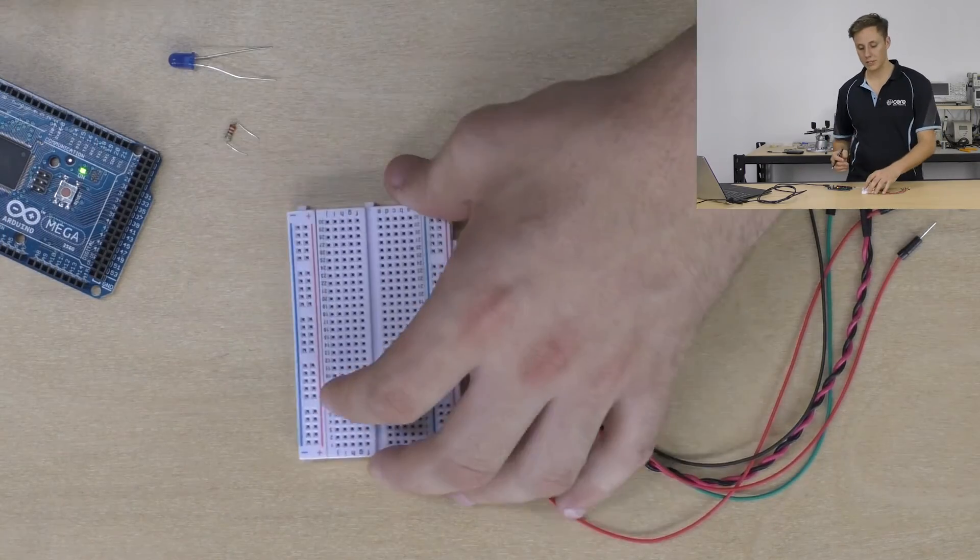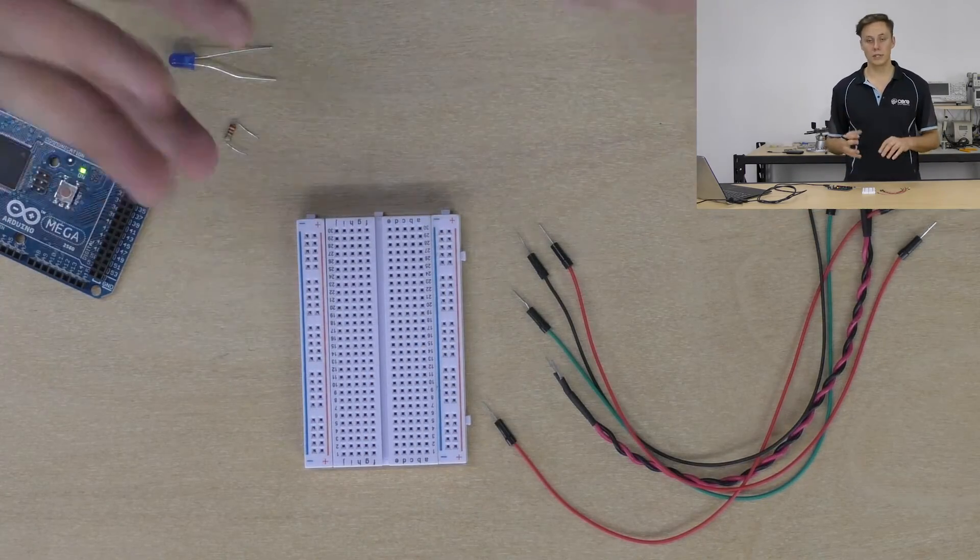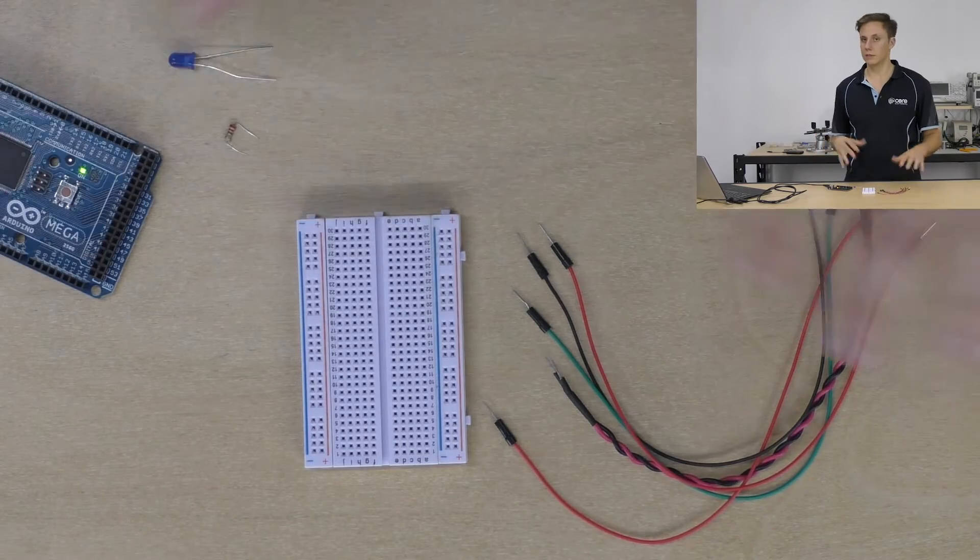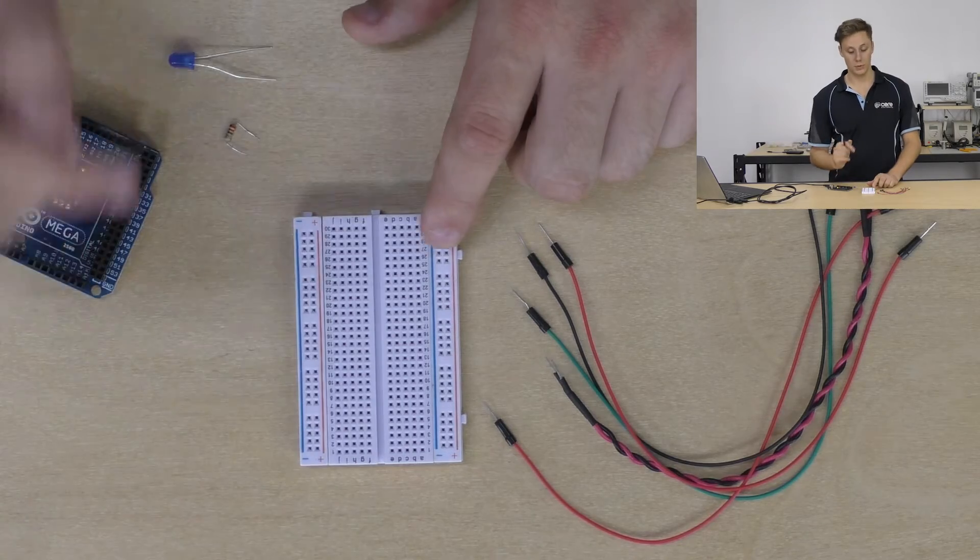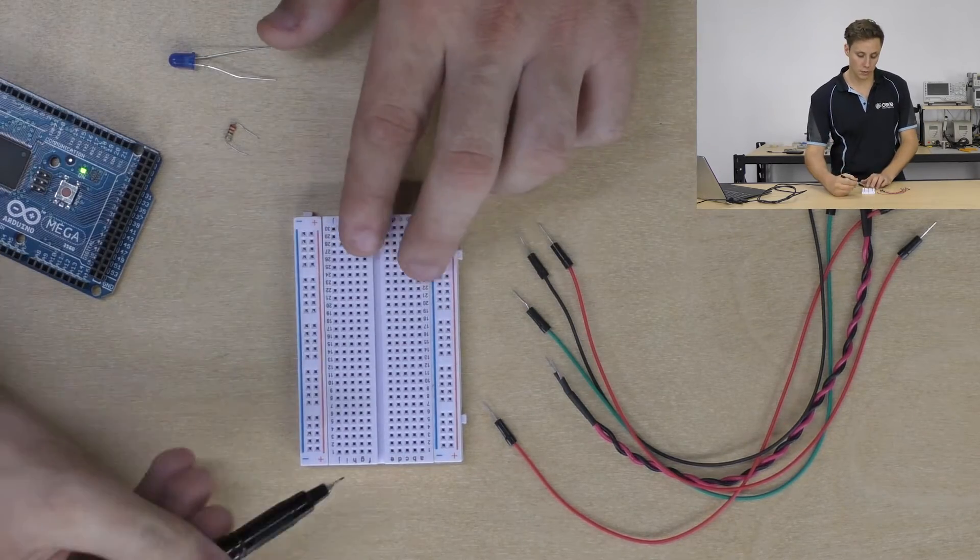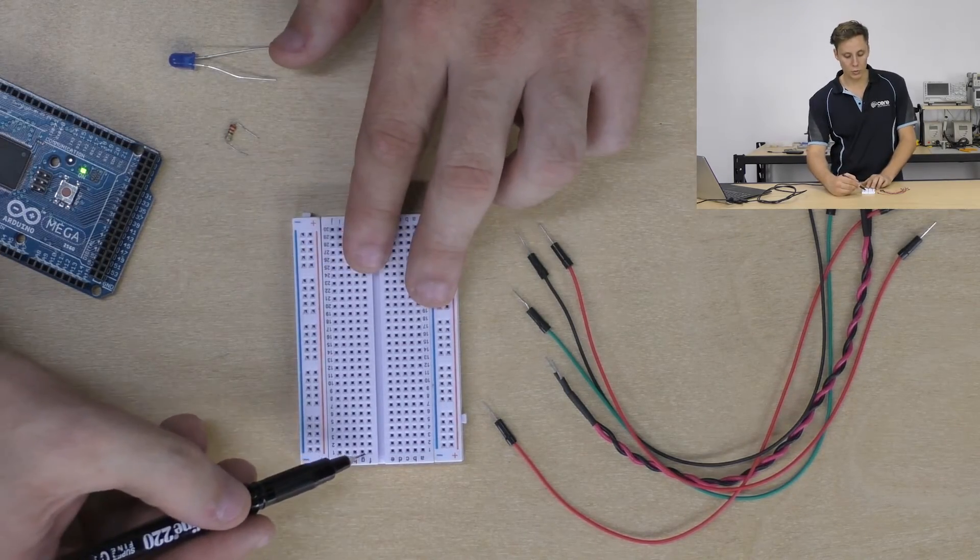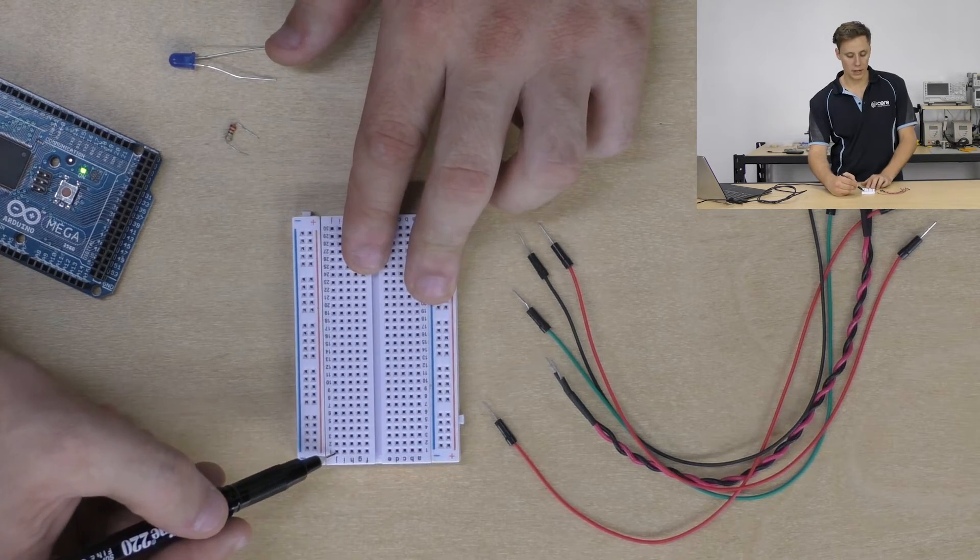It's also numbered one down to 30 so this is a smaller breadboard, it's a half size breadboard. You can get bigger ones, you can get three breadboards lined up together, you can get even smaller ones than these and this features power rails as well which we'll get to in a minute.